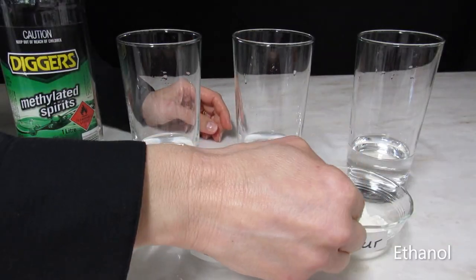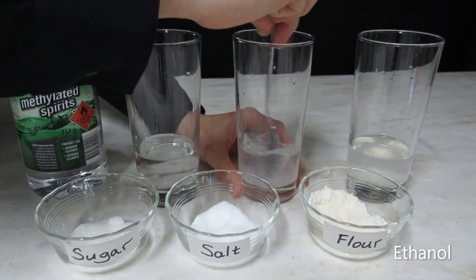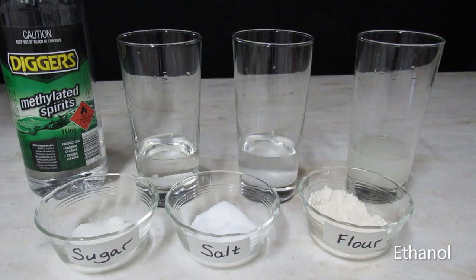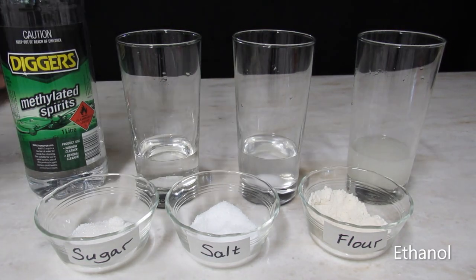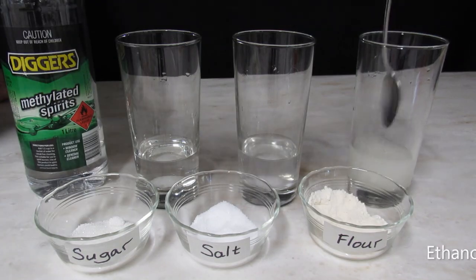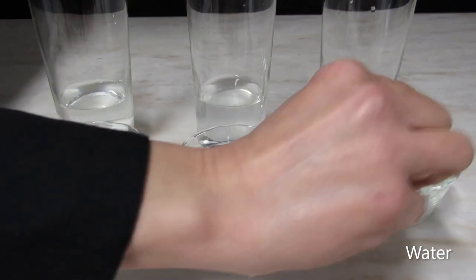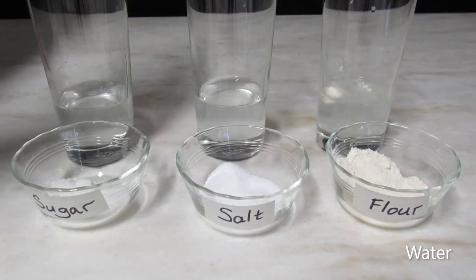I used my measuring cup from experiment one to pour 80 milliliters of liquid in each glass and a measuring spoon to add 2.5 milliliters of each solid to the glasses. Stir and observe the solids. Stir each glass three times, allowing any solid to settle in between the trials.